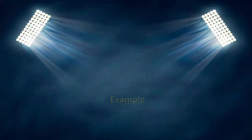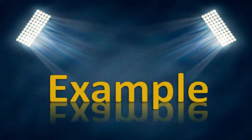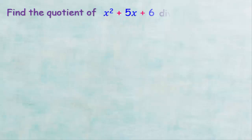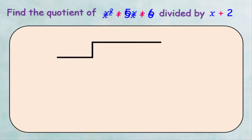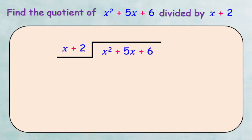Now let's see an example. Find the quotient of x squared plus 5x plus 6 divided by x plus 2. To do this we start by drawing the division sign, then we write the dividend x squared plus 5x plus 6 and the divisor x plus 2. We are going to use the following three operations.